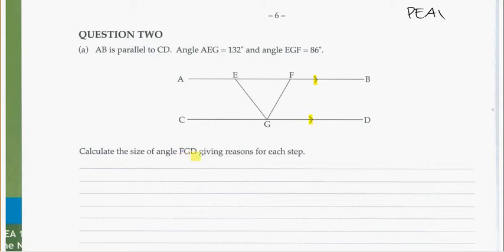Calculate the size of angle FGD — that one there. What information have they given us? Angle AEG is 132 degrees. Angle EGF, this one down here, is 86 degrees. And we're looking for angle FGD.